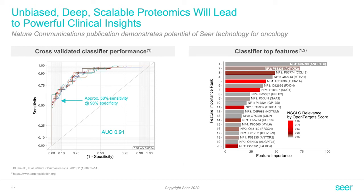Next we evaluated how we can use this biologically rich dataset to identify novel protein biomarkers, potentially for early cancer detection. We used a random forest classification algorithm that gave a strong performance measured here as an AUC of 0.91. On the right hand side you see a combination of proteins and respective nanoparticles that were the most important factors to stratify between the two groups, including both already known and potentially new protein biomarkers for cancer detection.